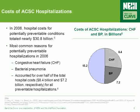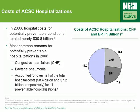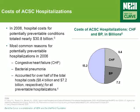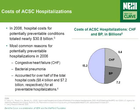Hospital admissions due to ambulatory care sensitive conditions end up costing the healthcare system a significant amount of money each year. In 2006, it was approximately $31 billion in hospital costs alone. Furthermore, not all ambulatory care sensitive conditions are equal, at least not from the point of view of how much they cost the healthcare system. In 2006, congestive heart failure and bacterial pneumonia accounted for over half of the total hospital costs — more than $8 billion and about $7 billion, respectively — for all preventable hospitalizations.